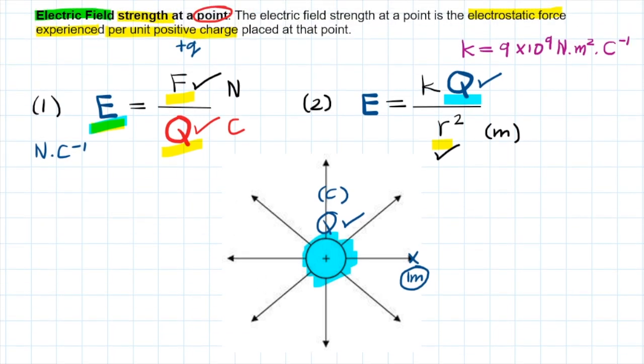K is just the proportionality constant that you also use to calculate the magnitude of the electrostatic force using Coulomb's law. So you will plug these values in, and then you will be able to calculate how strong the electric field is.